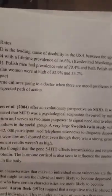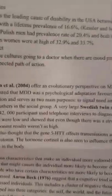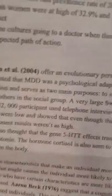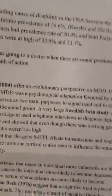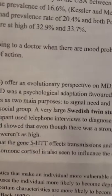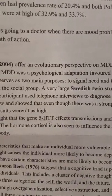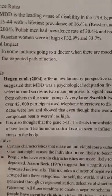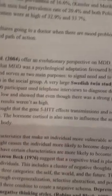For prevalence rates: major depressive disorder is the leading cause of disability in the U.S. between ages 15 and 44, with a lifetime prevalence of 16.6% — a useful mnemonic is that 666 is a bad number, and MDD is bad, so you remember 16.6 (Kessler et al., 2004). Polish men had a prevalence rate of 20.4%, while Polish and Russian women were at 32.9% and 33.7% respectively. Cultural factors, such as reluctance to seek medical help for mood problems, can increase or decrease these reported prevalence rates.